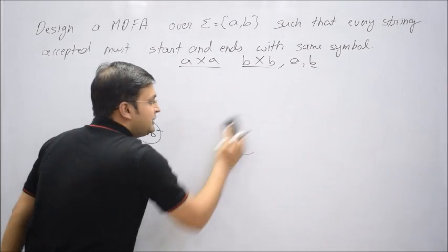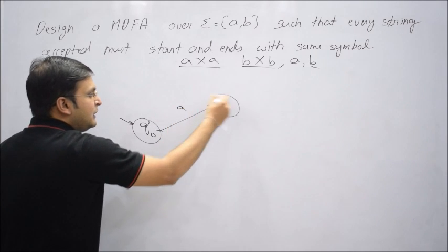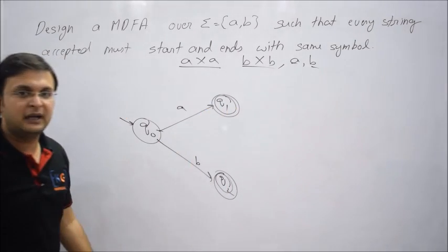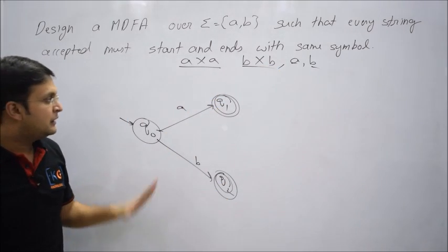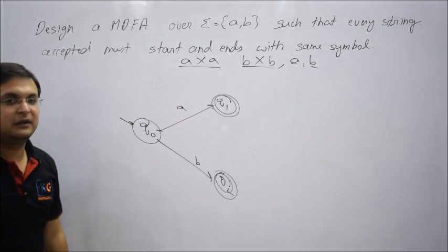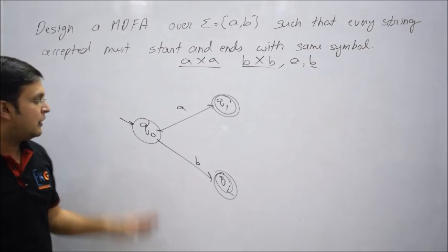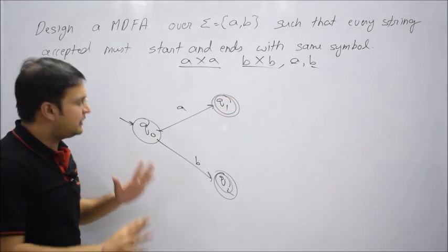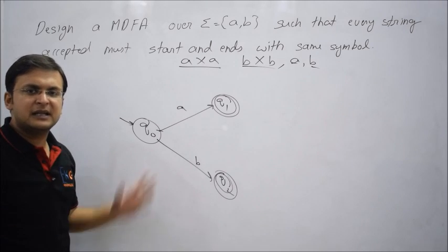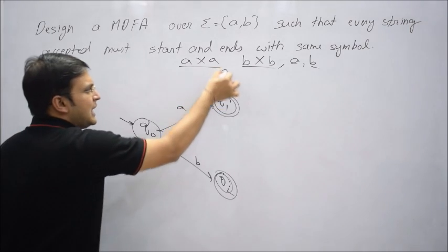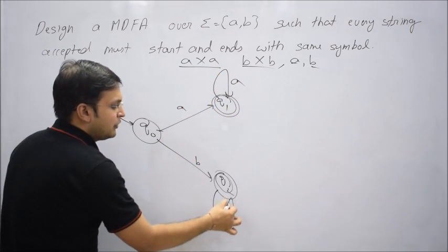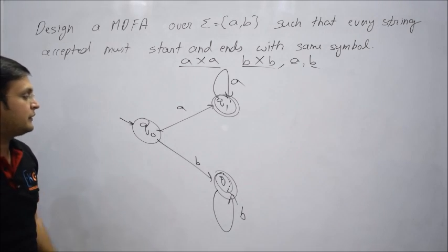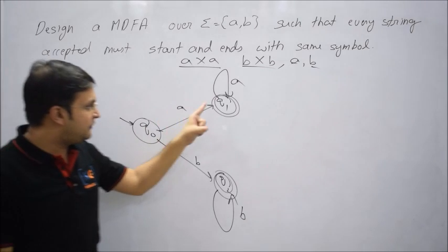The solution is to use different states. If A comes from Q0, go to Q1; if B comes, go to Q2. Both Q1 and Q2 should be final states because single A and single B are both acceptable. Now Q1 represents the A-side: if you are on state Q1, the last symbol was certainly A. If more A's come, that's no problem — loop on Q1. Similarly, loop on Q2 for B, because if it starts with B, further B's keep you on the final state.